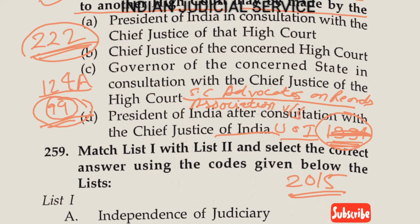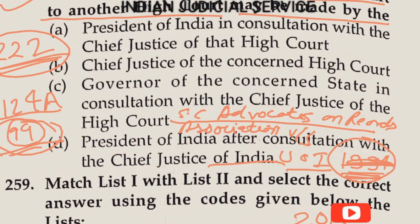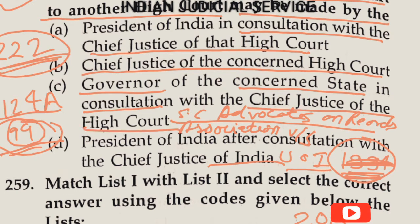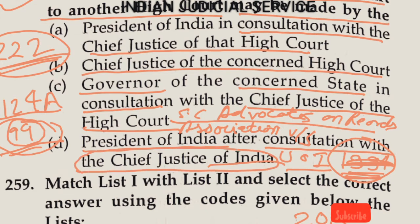Coming to the options for Question 258: Option A: President of India in consultation with the Chief Justice of the High Court. Option B: Chief Justice of the concerned High Court. Option C: Governor of the concerned state in consultation with the Chief Justice of the High Court. Option D: President of India after consultation with the Chief Justice of India. The answer is clearly Option D.